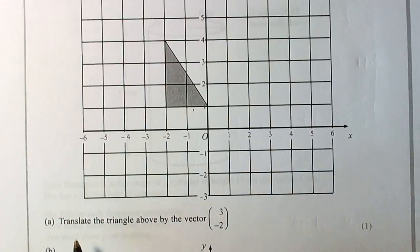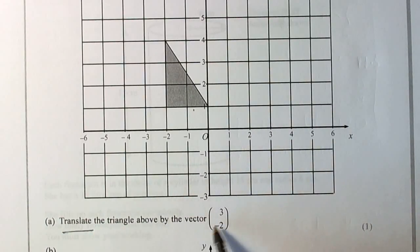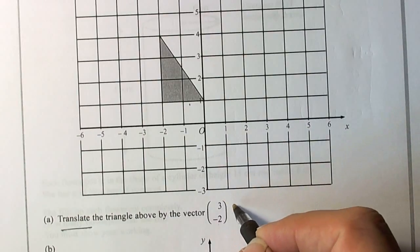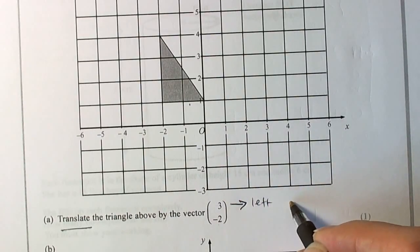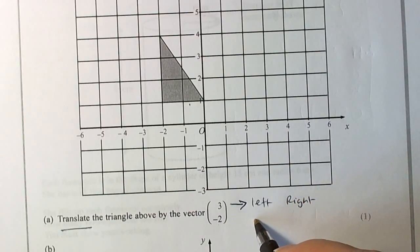So here the question is saying to translate the triangle by the vector (3, -2). What we need to realize with translations is the top vector is left-right and the bottom vector is down-up.